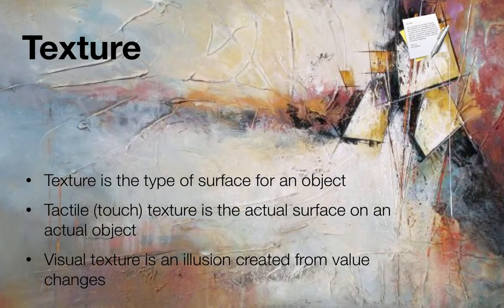Texture is the type of surface for an object. Tactile or touch texture is an actual surface on an actual physical object — that just means you can touch it.